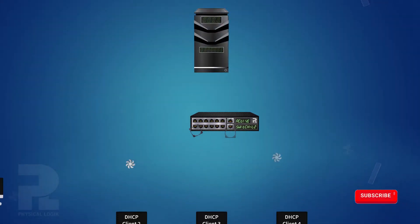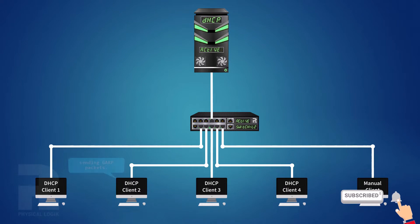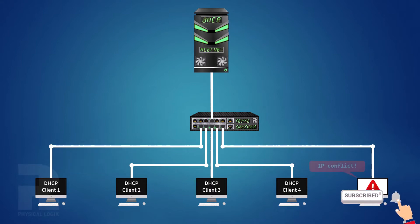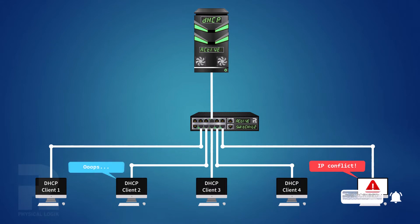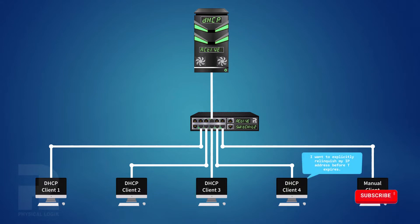After a client has successfully obtained IP configurations from a DHCP server, it broadcasts what is called gratuitous ARP packets on that segment to announce its existence on the network and inform other devices of its new IP configuration. What if this IP address is used by another device on the network? Or what if there wasn't any IP conflict and a device decides to relinquish its configuration before the specified time to expiry?